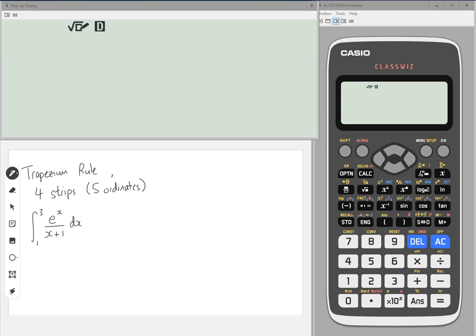The first thing you need to do for any trapezium rule question is work out the width of your strip, h, which is equal to the upper limit of your integral minus the lower limit divided by the number of strips, which is four. So you have two over four, which is one half, so 0.5.